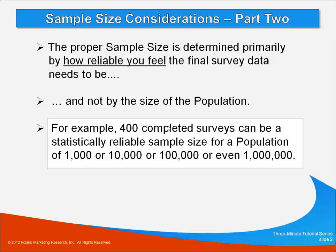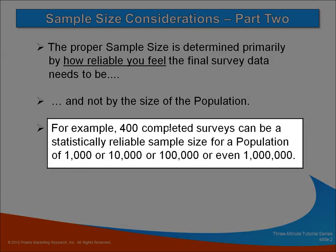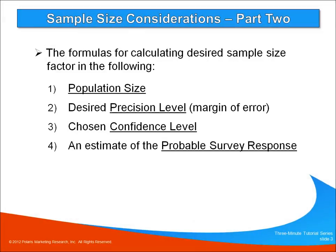I'll show you in a minute how 400 surveys can be a fairly reliable sample size for a population of a thousand people, or 10,000, or even a million.